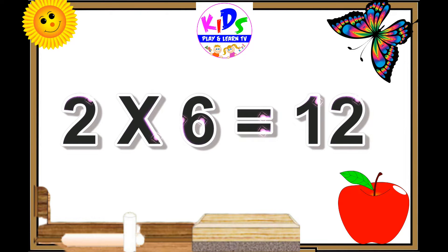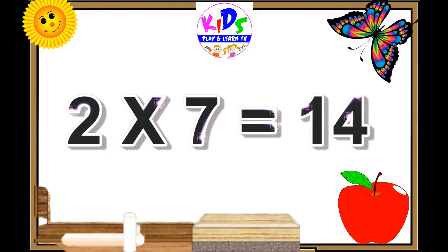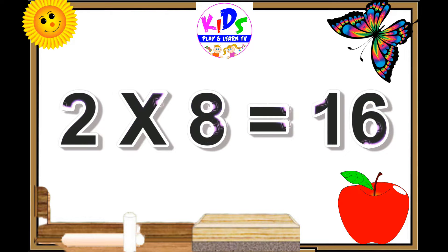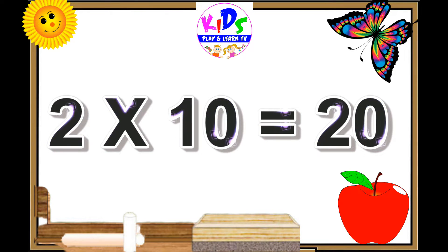Two sixes are twelve. Two sevens are fourteen. Two eights are sixteen. Two nines are eighteen. Two tens are twenty.